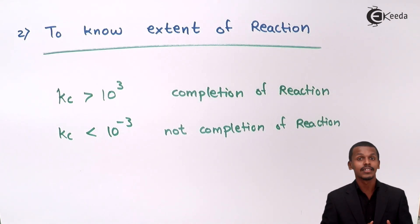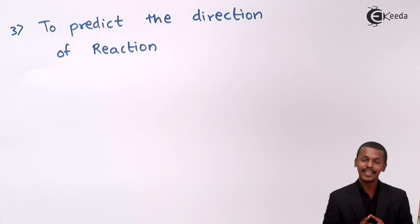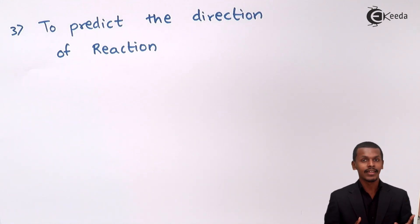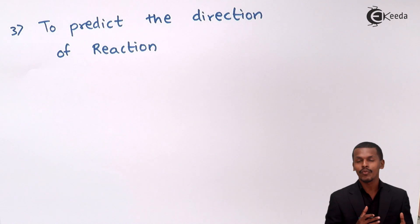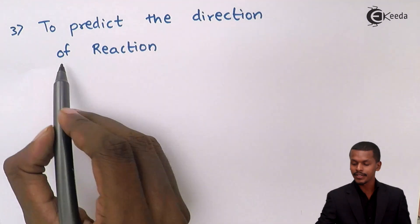Now let us talk about the third application: to predict the direction of the reaction. The Kc value gives us an understanding of whether the reaction is going in a forward direction or a backward direction.